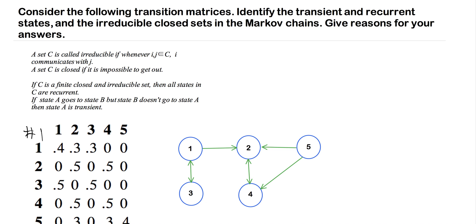It's going to come into play here when we're looking at these recurrent states, and you'll see why as we get going with these examples. A set C is closed if it is impossible to get out of the set. So let's take sets 1, 2, and 3, for example.